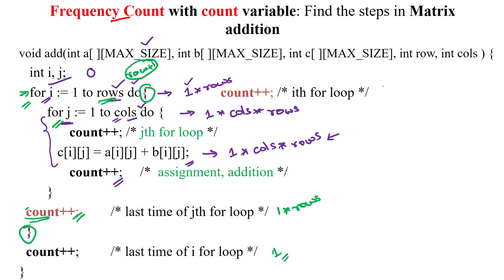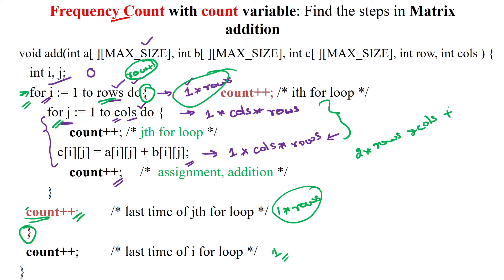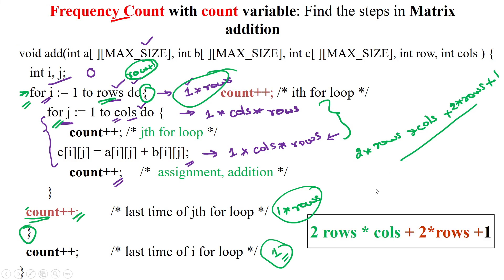Now calculating the total: we have 2 × rows × columns, then plus 2 × rows, then plus 1. So the total number of steps this algorithm consumes for execution is 2×rows×columns + 2×rows + 1. Thanks for watching.